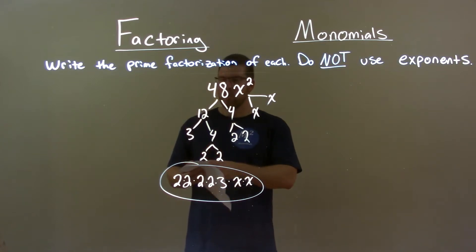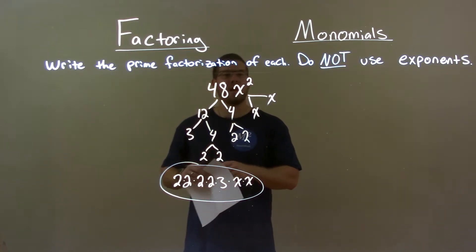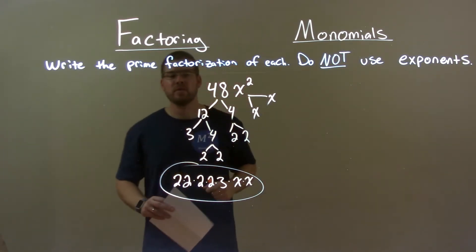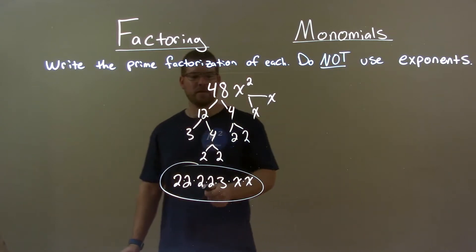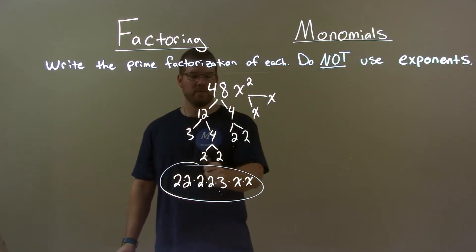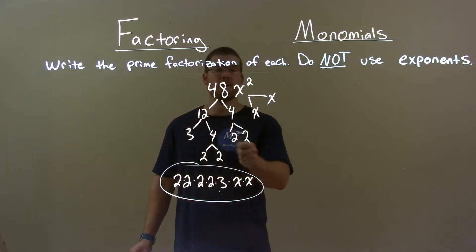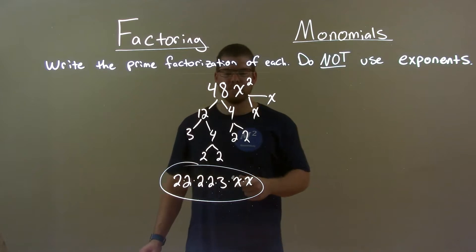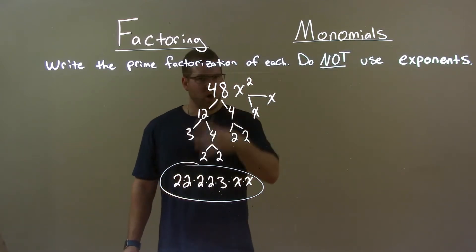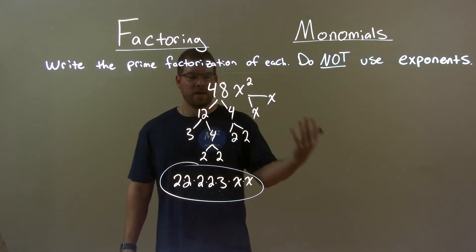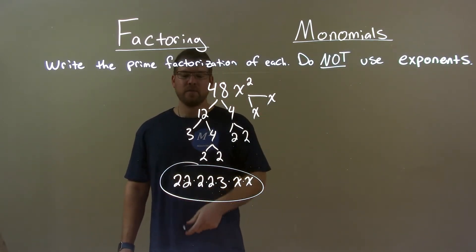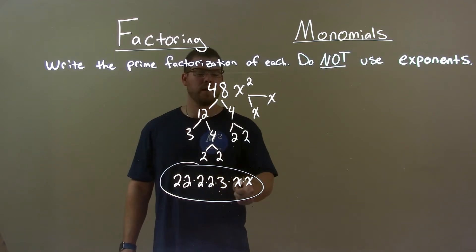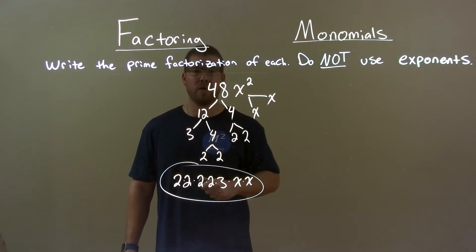Quick recap: we're given 48x squared and we have to write the prime factorization of that. 48 comes out to be 3 times 2 times 2 times 2 times 2, and x squared is just x times x. Combining all that together, it gives us our final answer: 2 times 2 times 2 times 2 times 3 times x times x.